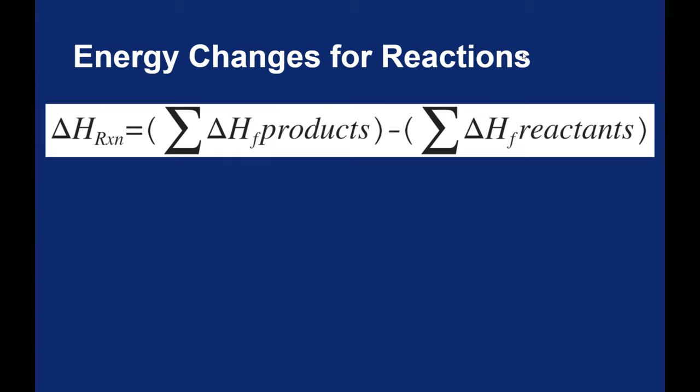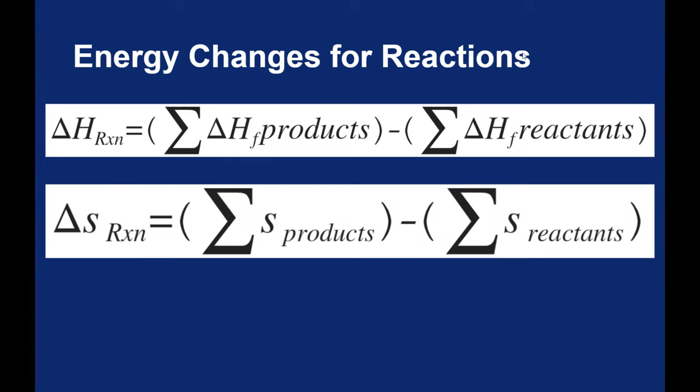In the last assignment, we used a similar equation for finding the change in entropy for a reaction. We said that the change in entropy of the reaction is the sum of the entropies of the products minus the sum of the entropy of the reactants.